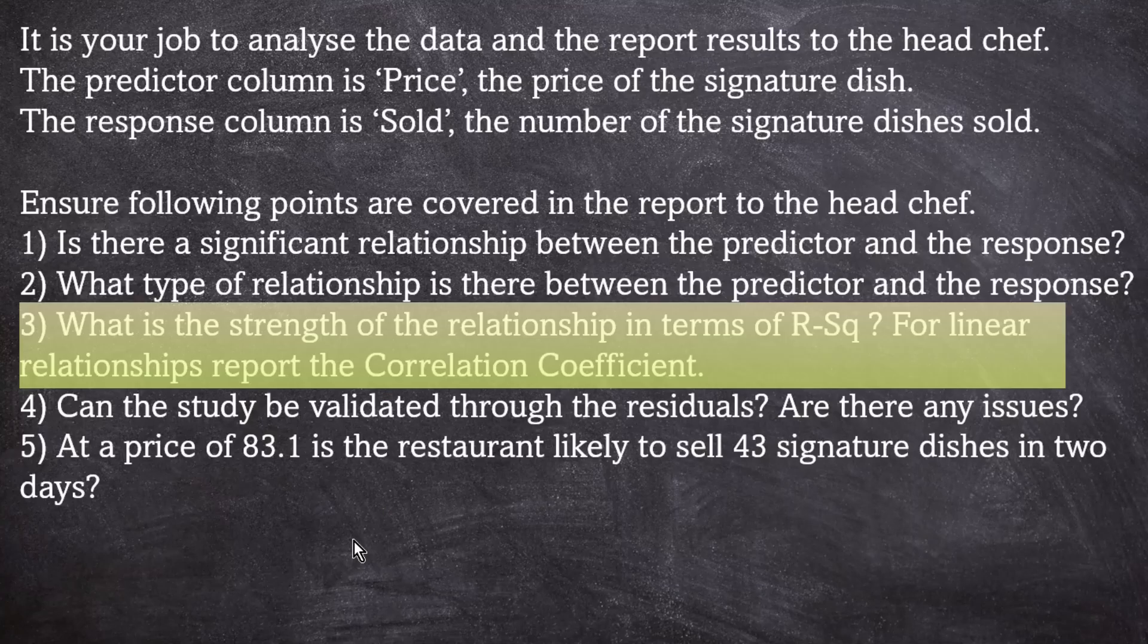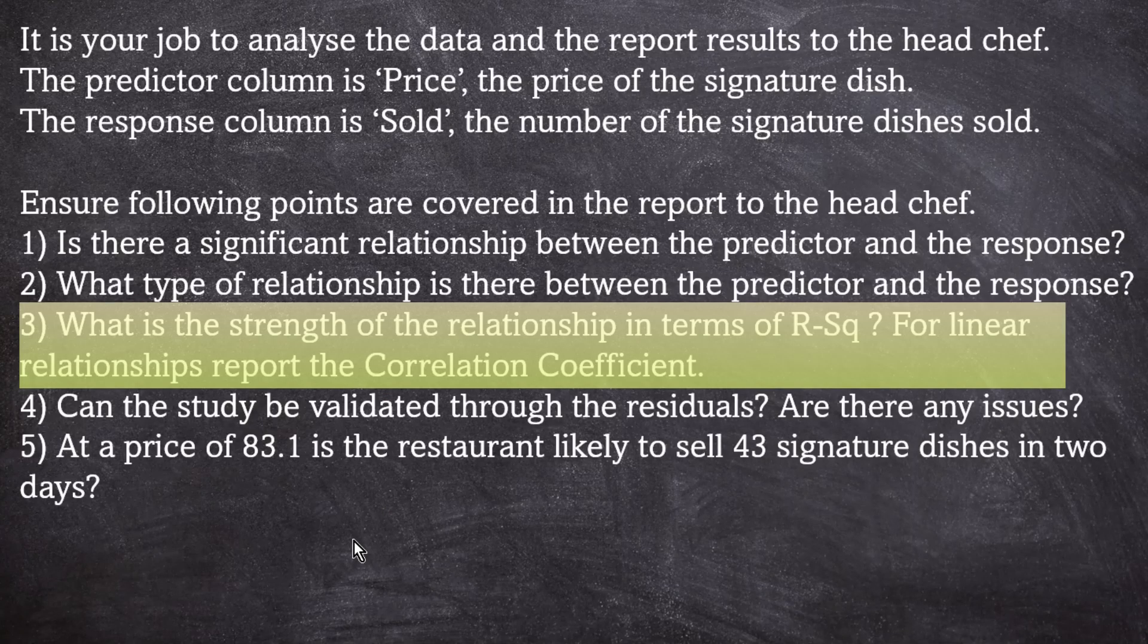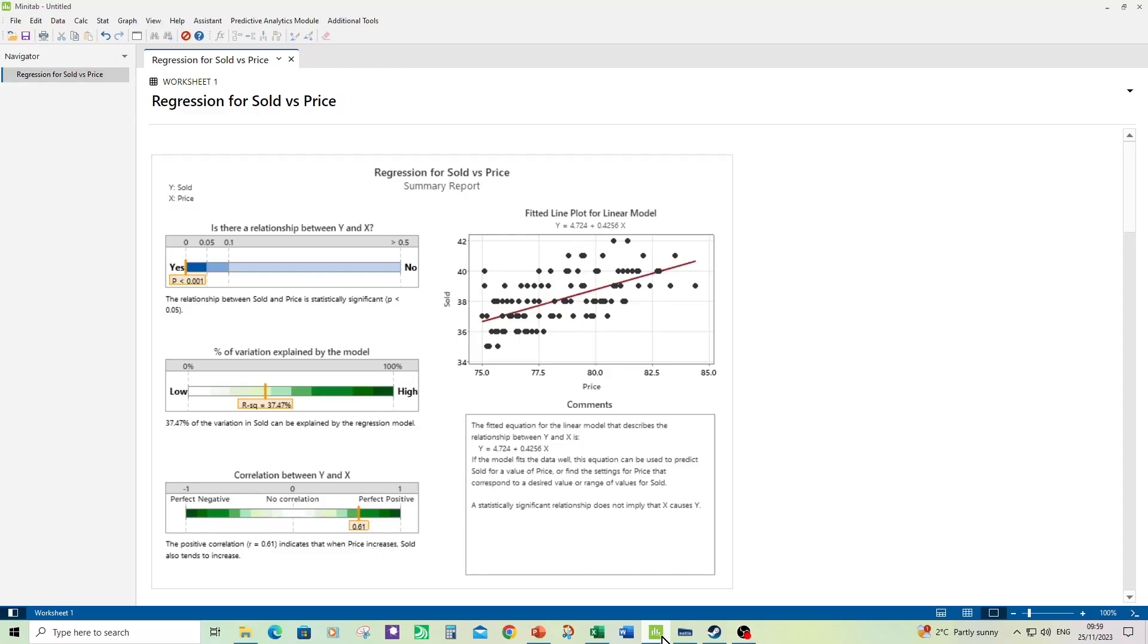Then we're on to number three. What is the strength of the relationship in terms of R-squared? For linear relationships report the correlation coefficient. So again we go to the summary report we see the R-squared value at 37.47. So not a particularly strong relationship but there is a relationship there. That means that 37.47 percent of the changes in the response can be explained by changes in the predictor. So the strength of the linear relationship is 0.61. That's the correlation coefficient. The correlation coefficient is also called R. That's where you get your R-squared from.